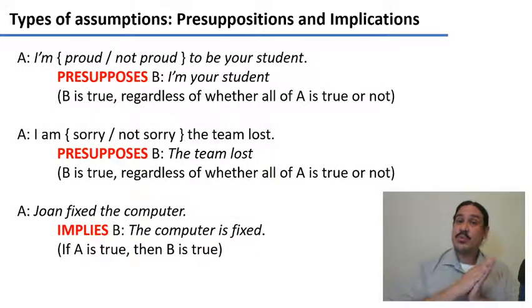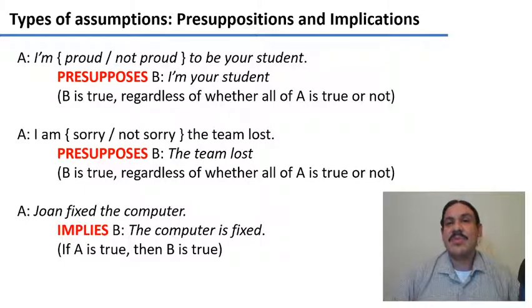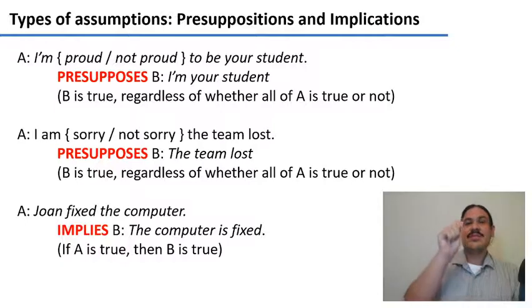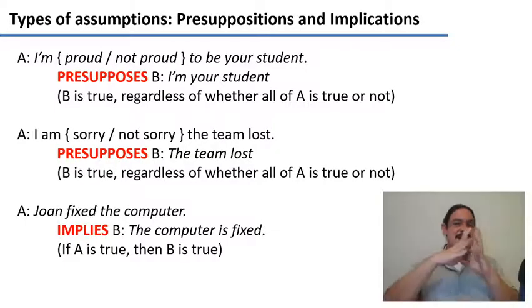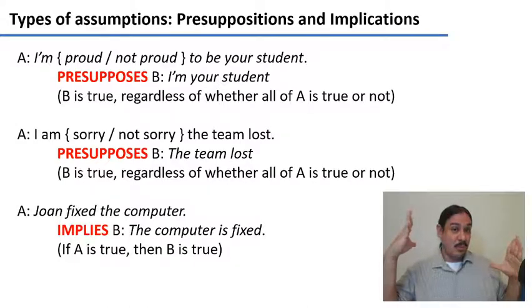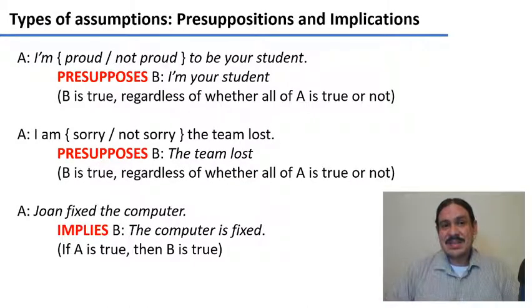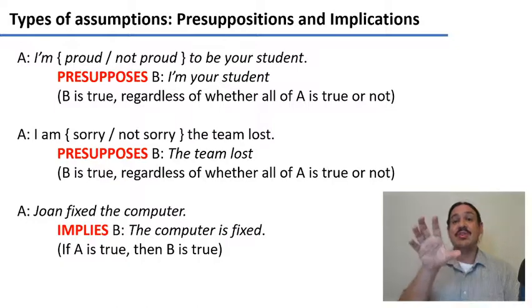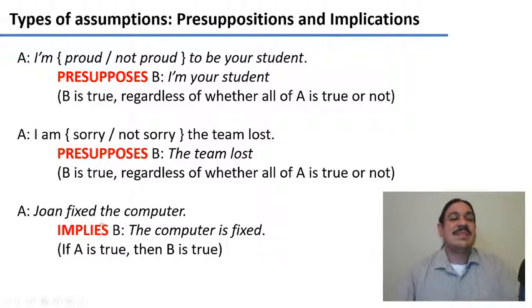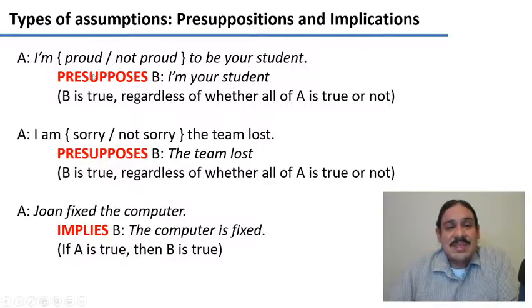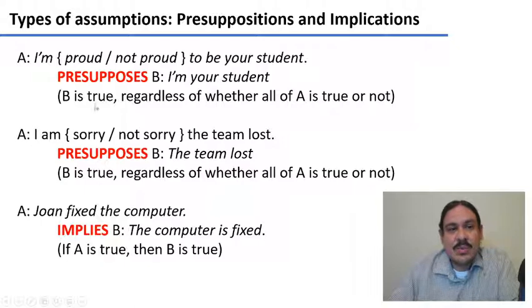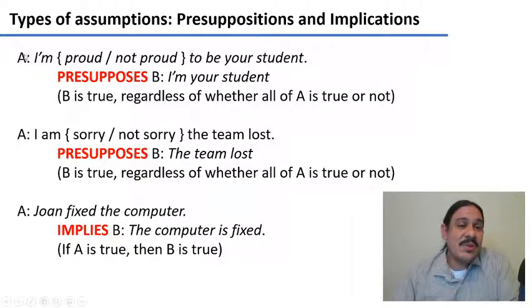Sentences can be true or false, and from those statements we can derive more information and eventually build entire networks of information about our world. Two basic types of assumptions we can make are presuppositions and implications, and we can use them to gain knowledge. For example, if I say 'I'm proud to be your student,' it presupposes that I am your student — because to be proud of being your student, I must be your student. Statement B is true regardless of whether A is true or not.